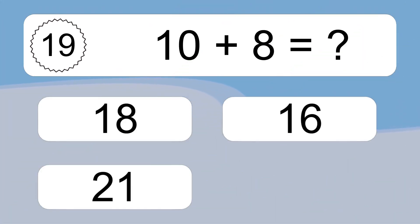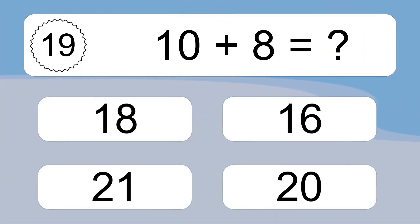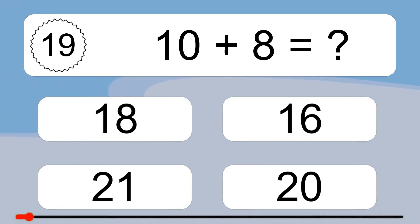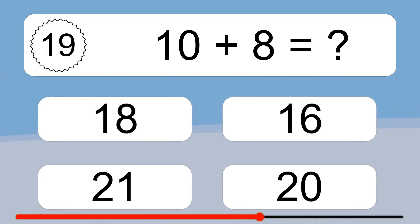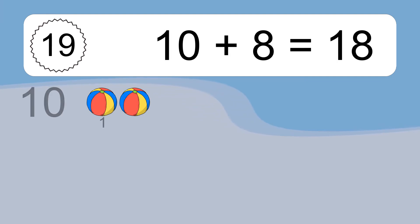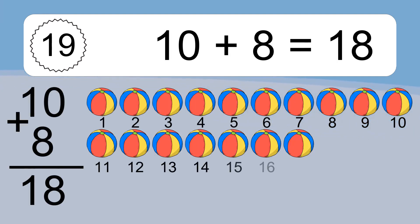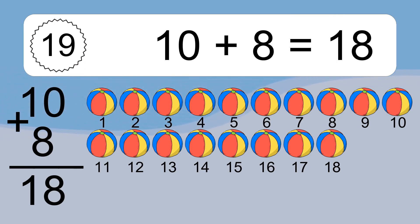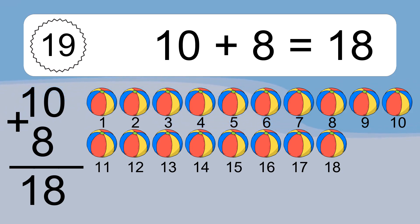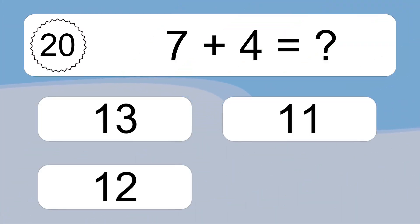10 plus 8 equals what? 10 plus 8 equals 18. Let's count it. 1, 2, 3, 4, 5, 6, 7, 8, 9, 10, 11, 12, 13, 14, 15, 16, 17, 18. 7 plus 4 equals what?